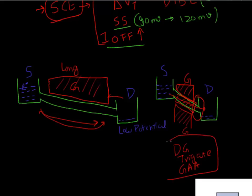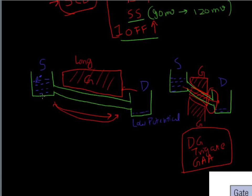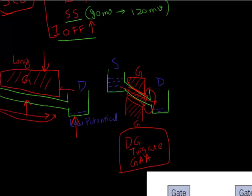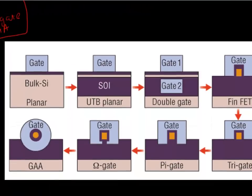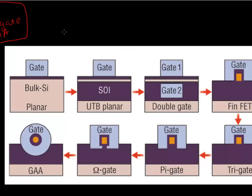That's a very good analogy to understand why there is a need for these devices with improved electrostatics to improve the short channel effects. Plotted on this cartoon are devices with increasing electrostatic control of the gate — from each arrow, the next device has better electrostatics or better gate control on the flow of the carriers.